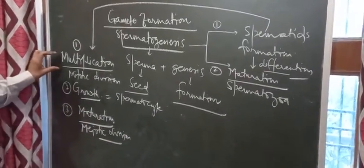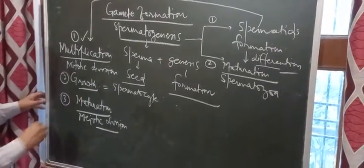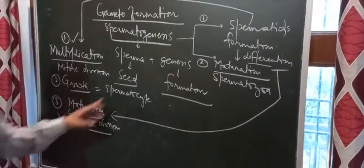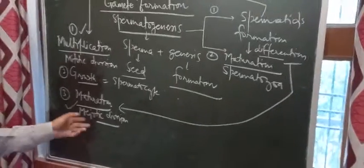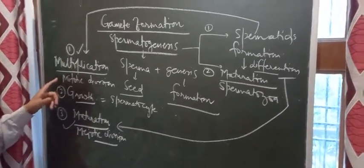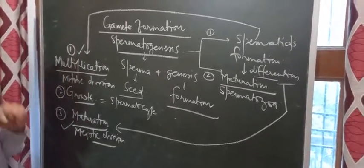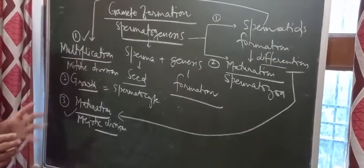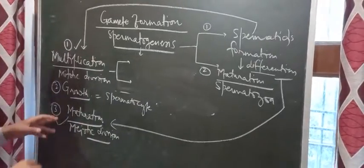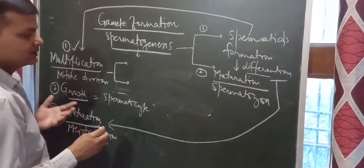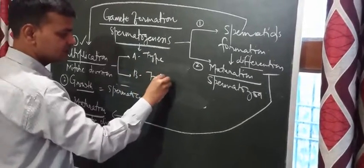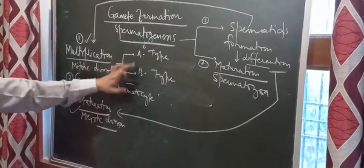One differentiation takes place during multiplication and one during maturation. During multiplication, the mother cells increase in number and divide into two types: the spermatogonia type A and type B. The change into different types of spermatogonia constitutes the first differentiation.